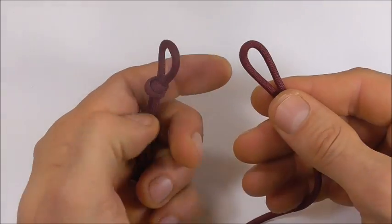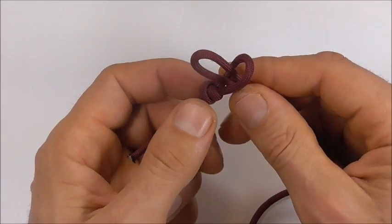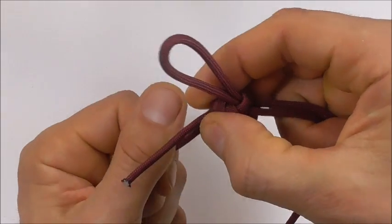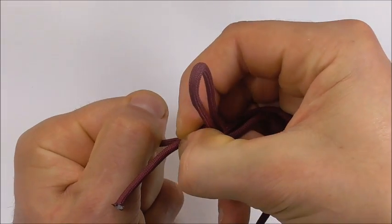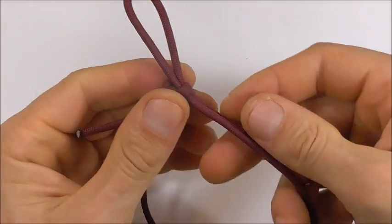Just form a bight and feed it through that noose, and then close that noose down quite tight.